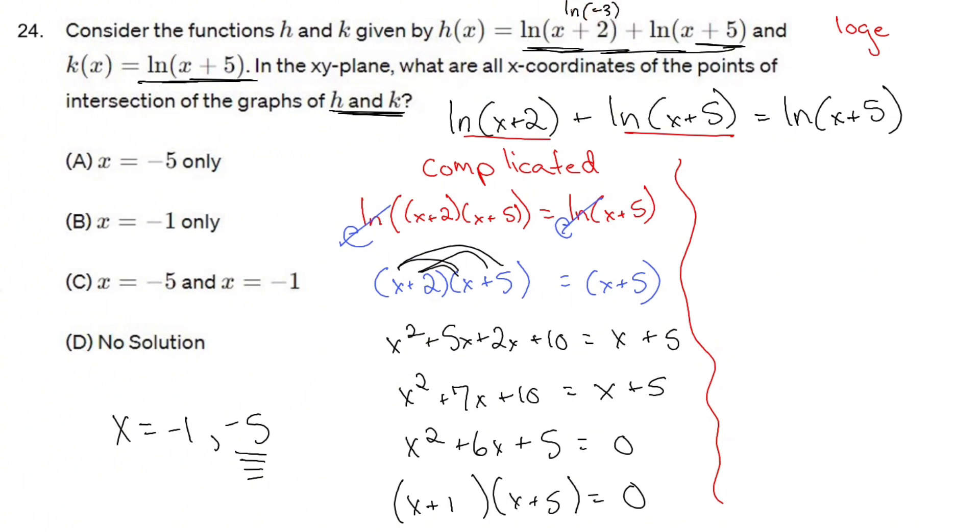That's no good. You can't have an ln of negative 3. You can't have an ln of negative anything or a zero for that matter. So negative 5 is no good. The answer is B.